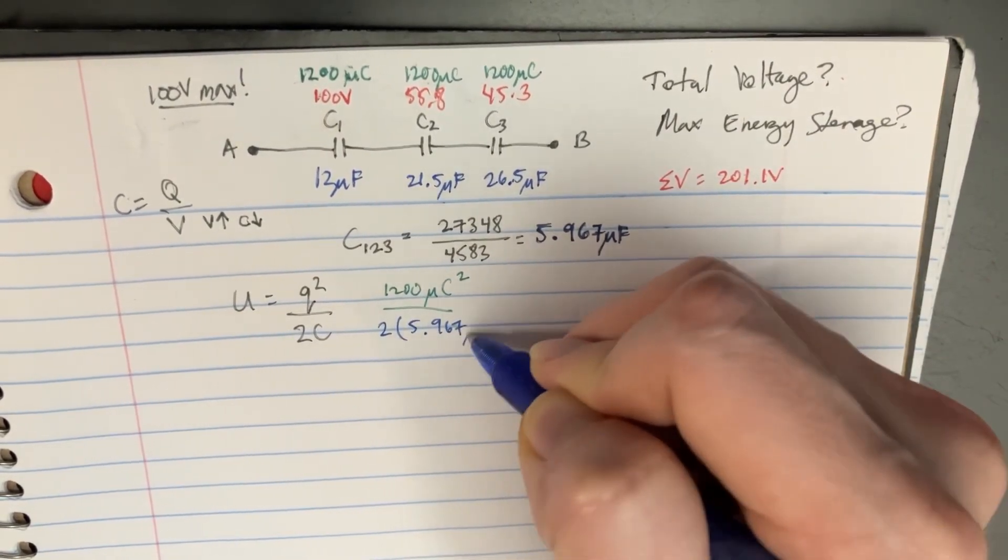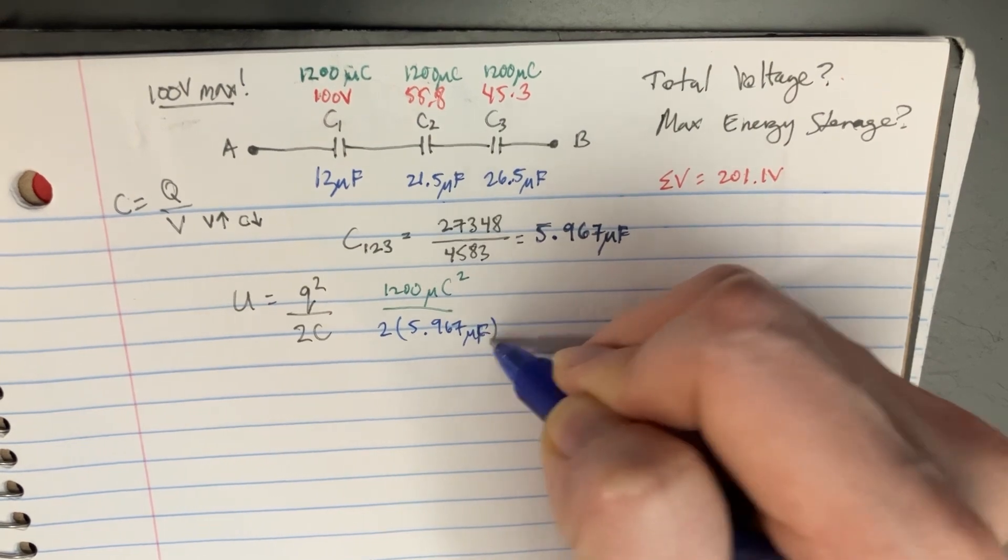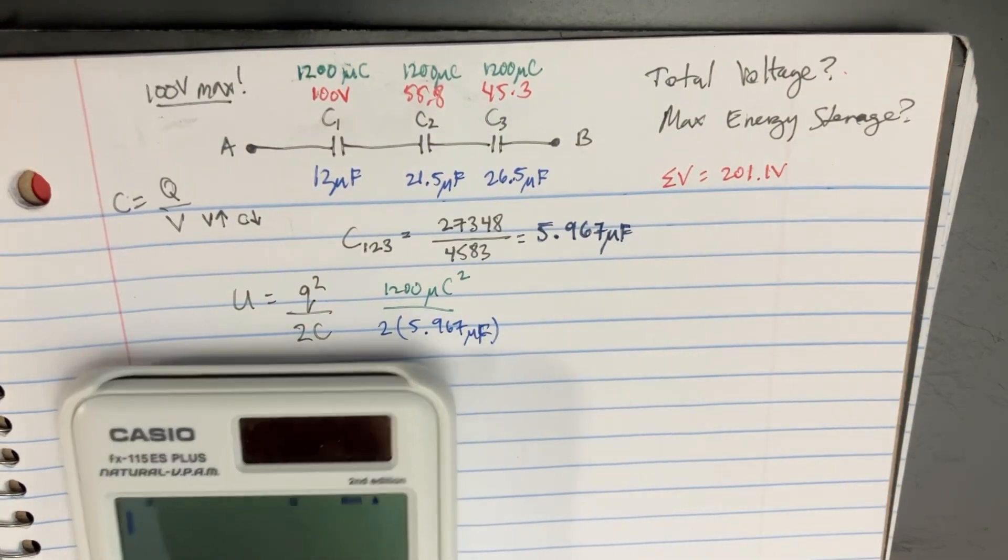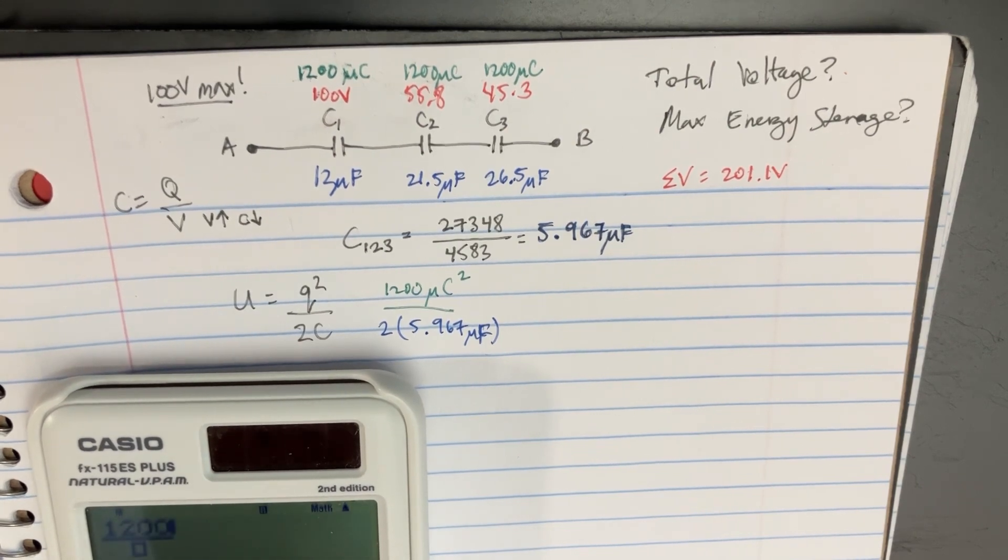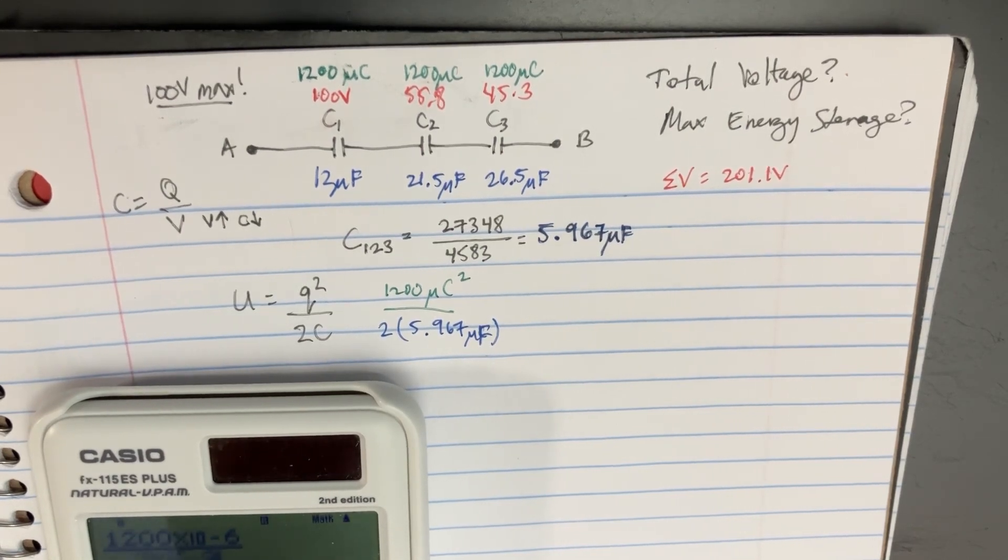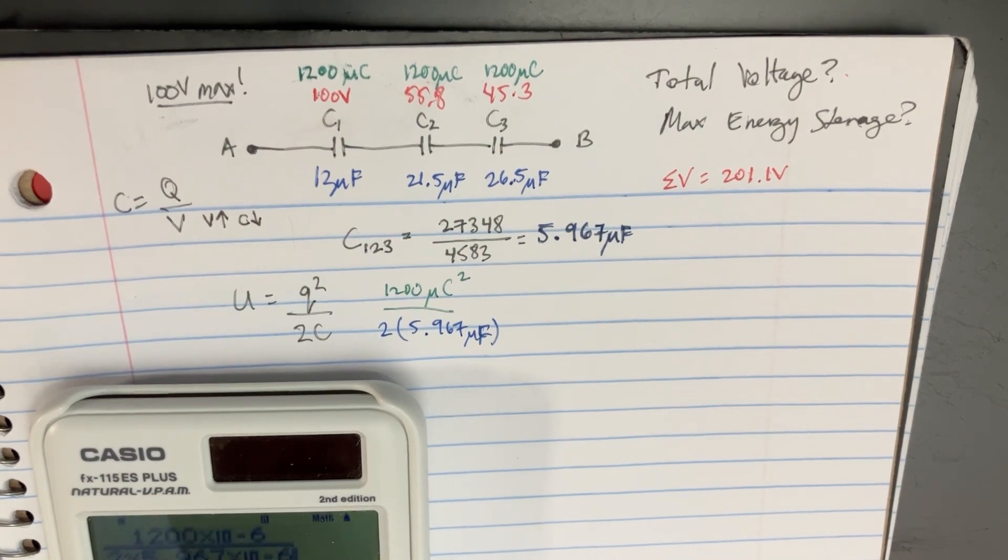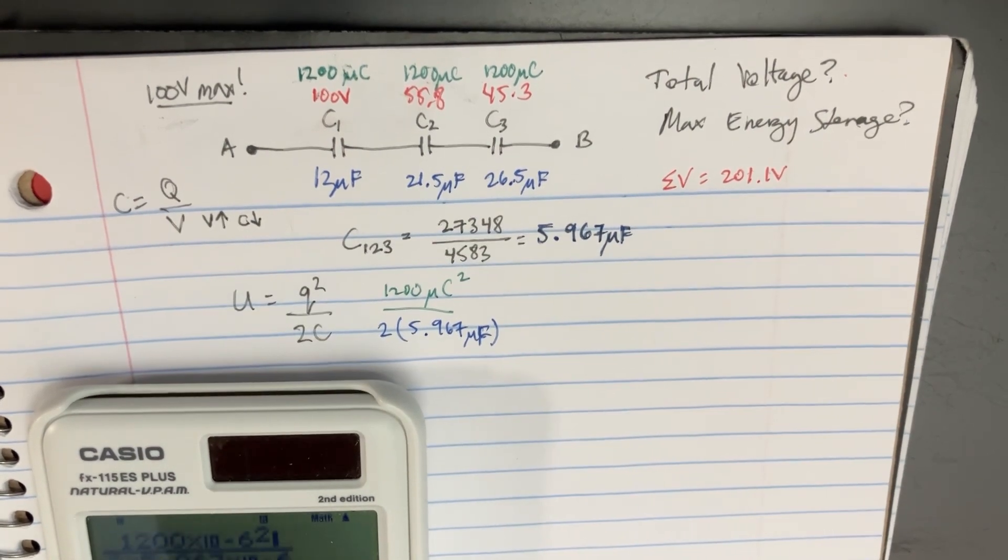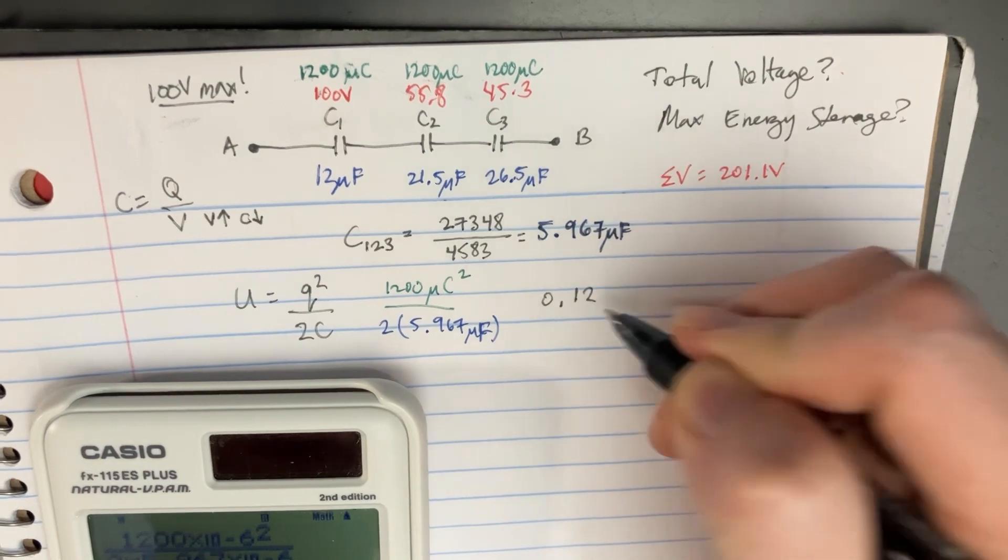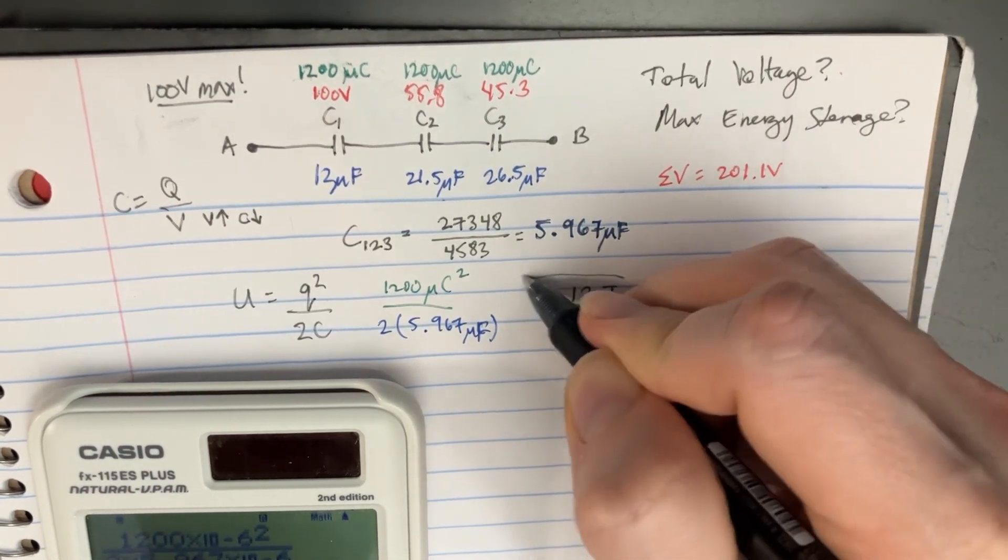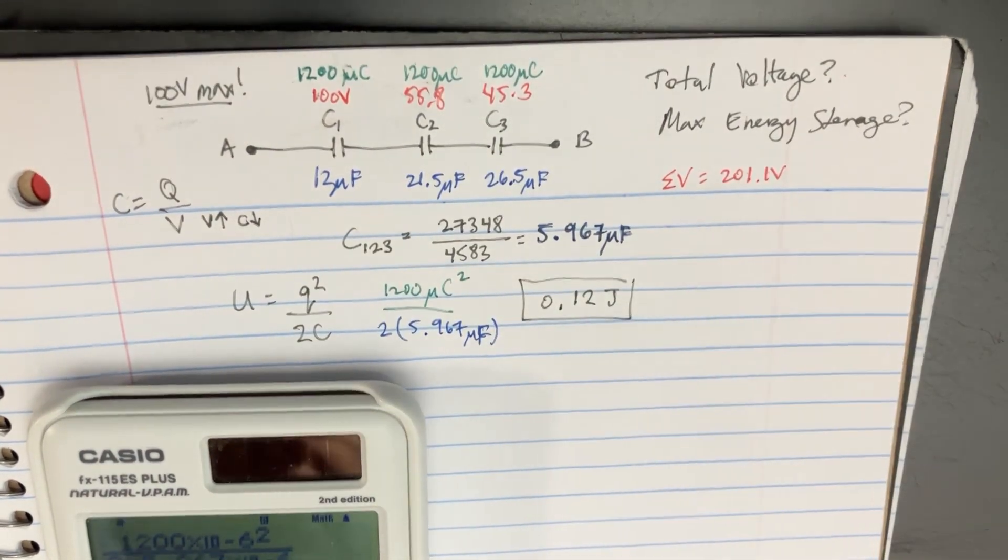And let's plug in 1,200 microcoulombs times 10 to the negative 6 divided by 2 times 5.967 microfarads times 10 to the negative 6. We're going to square the top. And then we're going to get 0.12 joules. That's the maximum energy storage. All right.